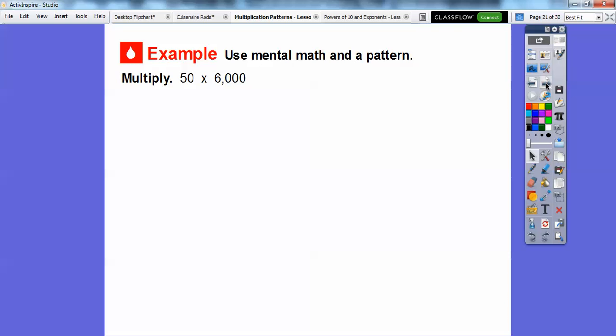So let's use mental math in a pattern here. 50 times 6,000. Well, 5 times 6 is 30. Everybody knows that. If you don't, then just count 5, 10, 15, 20, 25, 30. And I'm using my finger here, 6 times. 5 times 6 is 30.